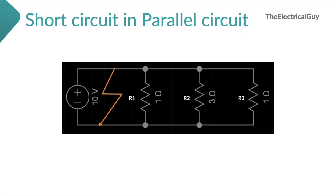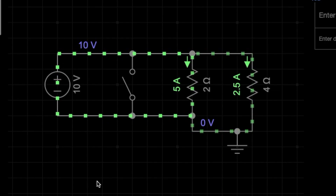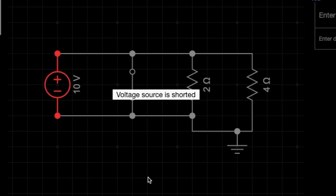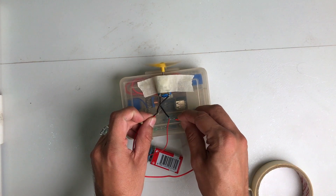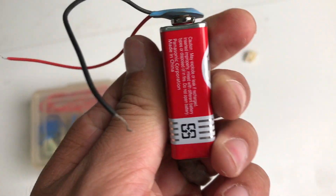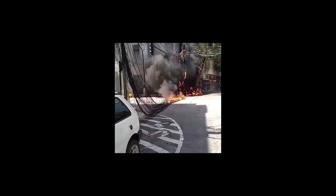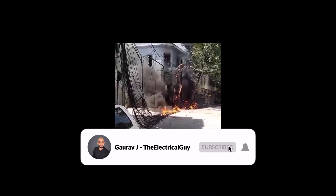Now let's understand the dead short in a parallel circuit. If there is a short that eliminates all the components or load from the circuit, the resistance becomes zero, causing extremely high current — similar to the dead short in a series circuit. In the simulation, the normal situation is shown first, and when the switch is closed it acts as a short circuit — everything stops. This is a dead short circuit. The same thing happens in a series circuit. In the dead short circuit, the system current can become extremely high and has the capacity to completely damage the system.